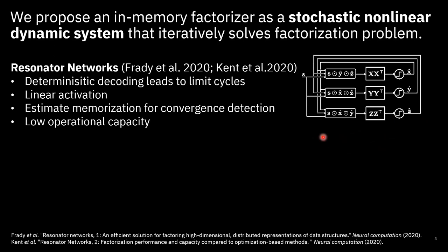Our work is based on the 2020 paper from Frady and Kent, who introduced the concept of resonator networks. The idea is that a signal comes into the network and it starts with some initial estimates for the x, y, and z factors. They perform an unbinding process, then matrix-vector multiplications followed by binarization of the estimates to start the next iteration. After certain iterations, it will start resonating — producing the same input and output — at which point we say it has converged, and the estimates are the final factored results.